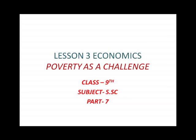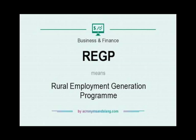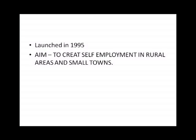We are describing the third lesson of economics: Poverty as a Challenge. In the previous video, we started anti-poverty programs initiated by our government to provide employment and control poverty in India. The next program is the Rural Employment Generation Program. This scheme started in 1995. The main objective of this scheme is to create self-employment opportunities in rural areas as well as small towns.